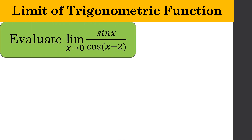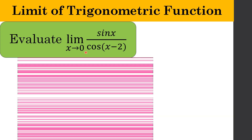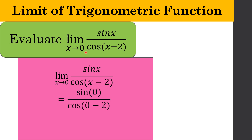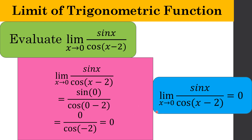Evaluate the limit of sin x over (cos x minus 2) as x approaches 0. By direct substitution, all x become 0. That becomes sin(0) over (cos(0) minus 2). Sin(0) equals 0, and cos(0) minus 2 equals 1 minus 2 equals negative 2. So 0 divided by negative 2 is 0. Therefore, the limit of the function as x approaches 0 is simply 0.